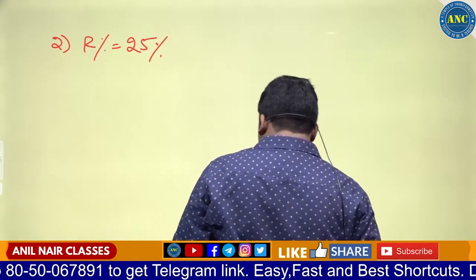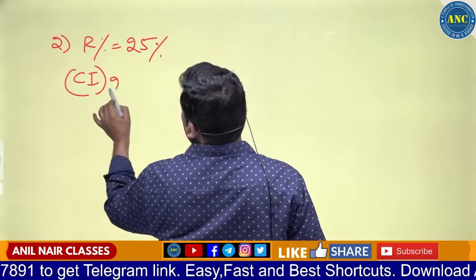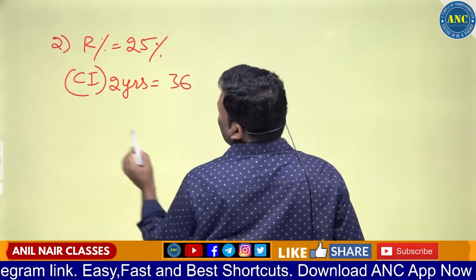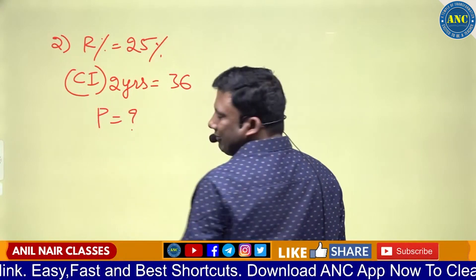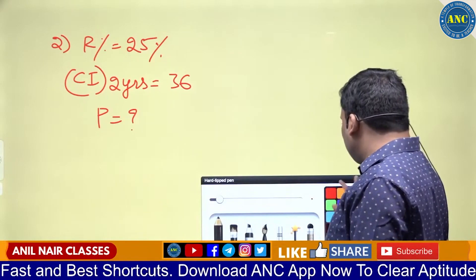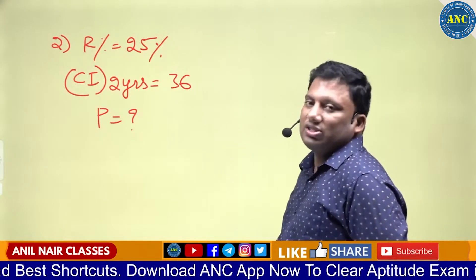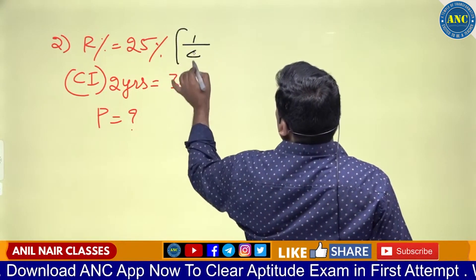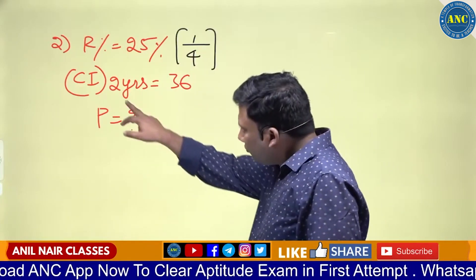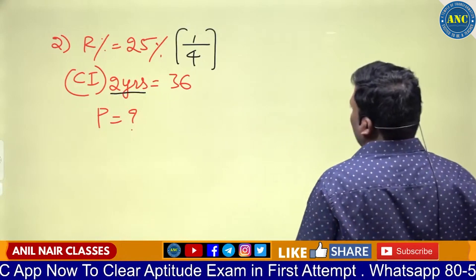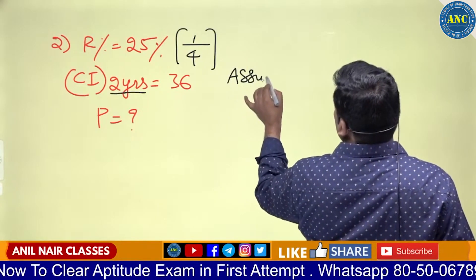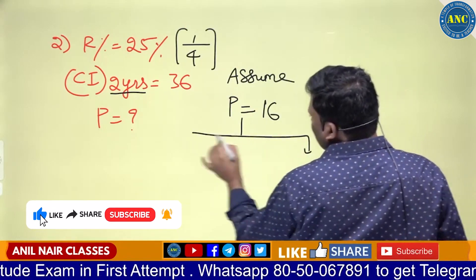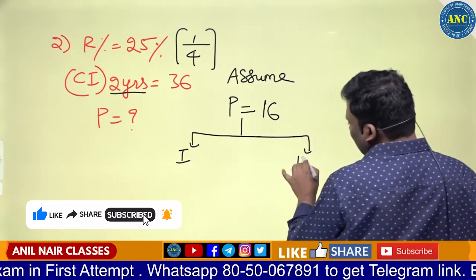Same approach for compound interest. R percentage is 25%, CI for two years is 36, find the principal. 25% is 1 by 4. Two years are given, so assume principal as denominator power k: 4 squared equals 16. There is a first year and a second year.